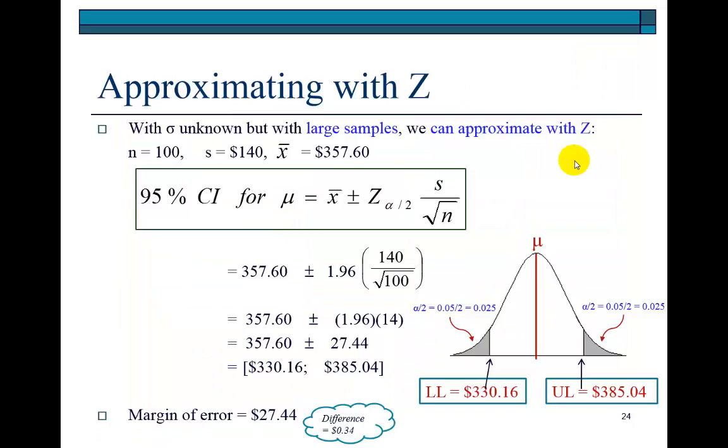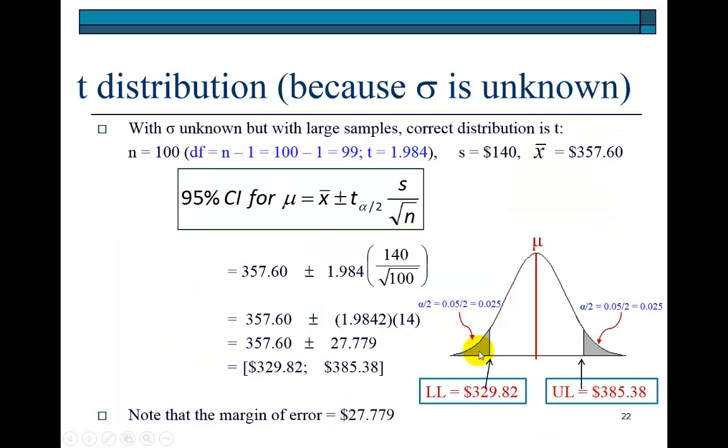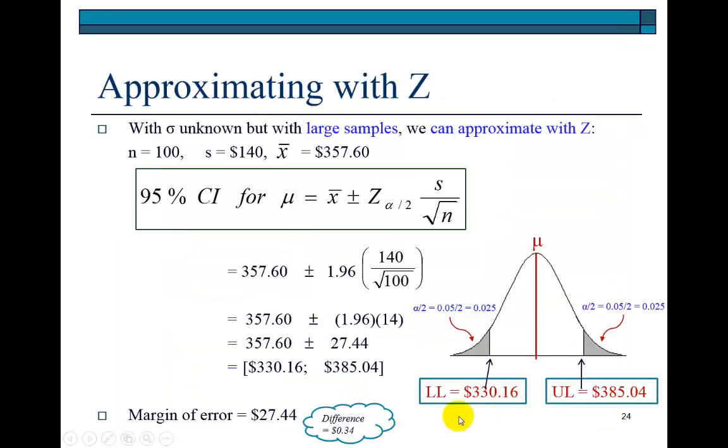If we use the approximation, we're just going to throw in 1.96 right here. With that, we find the limits to be lower limit $330.16, upper limit $385.04. Observe that the difference between the limits calculated using the Z approximation and those calculated using the T statistic is only $0.34.